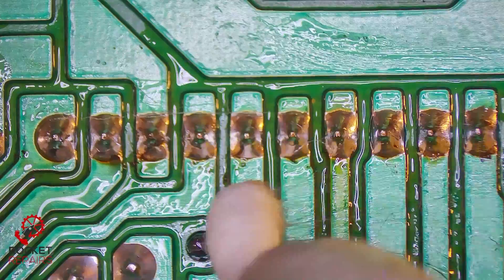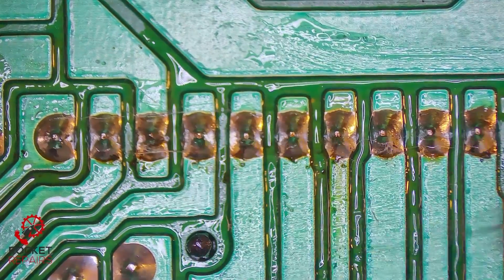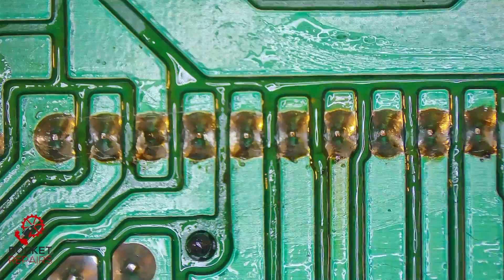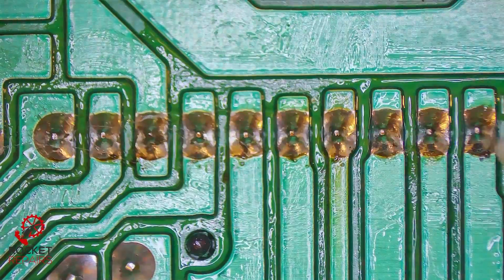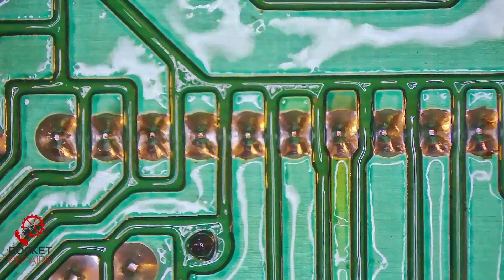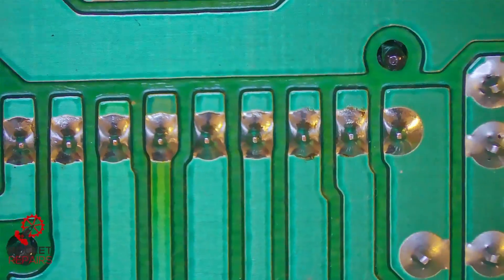And now a lot of cleaning up to do with the flux. Don't need to use IPA for this part just yet. Just get what we can up without the isopropyl alcohol. Now come in with our brush and IPA. We look a lot better now. Yeah, those joints look a lot better than what they were.